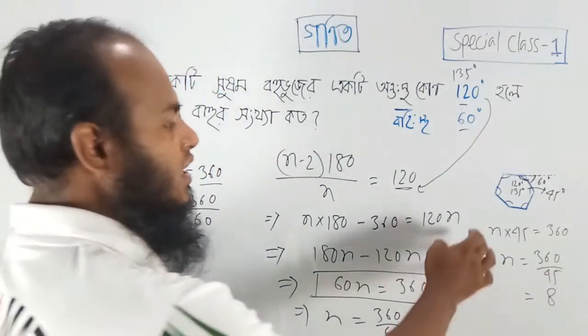6 minus 2 into 180 divided by 6 equal to theta. 4 into 3 equal to theta. 1 minus 2 equal to theta. I'm going to go back to the formula n.